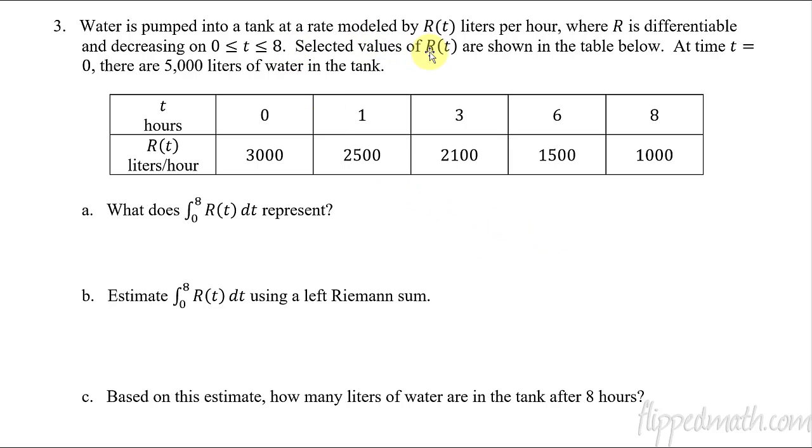Next up, we've got this tank. Water is being pumped into a tank at a rate modeled by R(t). Recognize again that when you see the word rate, you have to really focus in on that this is a rate. And it's liters per hour. So you look at the table. Yep, it's liters per hour. R is differentiable, decreasing from 0 to 8. And then we've got selected values of R(t). And then we also say here that at time t equals 0, there's 5,000 liters of water. Some of you might be looking, well, 5,000 liters, but right here it says at 0, there's 3,000. What's going on here? Well, that's because this is not how much water is in the tank. Remember? This is the rate. This is liters per hour. So it's changing by 3,000 liters per hour. We're starting with 5,000 liters in the tank.